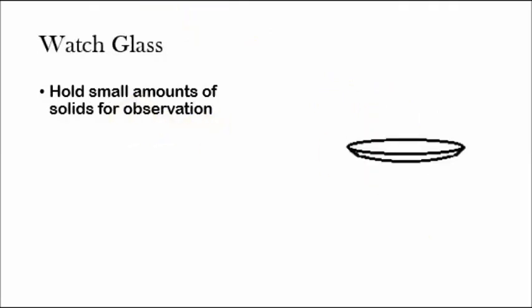Watch glass. A watch glass holds small amounts of solids for observation and it's literally just kind of like a plate, and it's just made of glass.